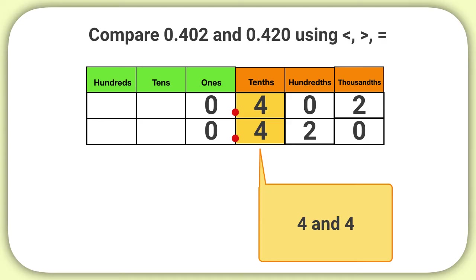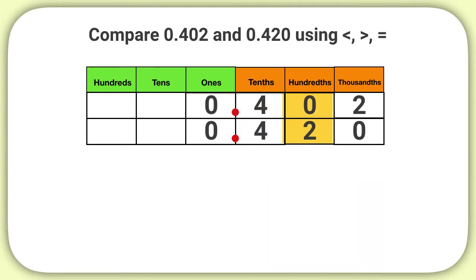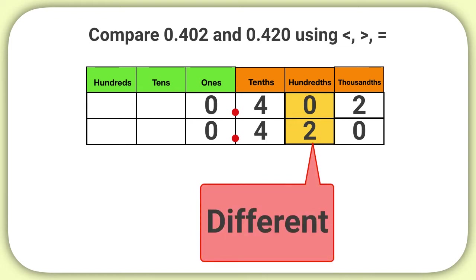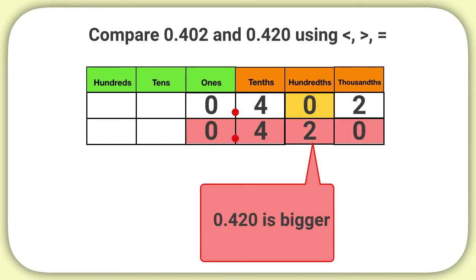These digits also have the same value, so I look to the right to the hundredths place. In the hundredths place, I see a 0 and a 2. The 2 is different than the 0. Which is greater, 0 or 2? 2. So the number with the 2 in the hundredths place must be the bigger number. 420 thousandths is greater than 402 thousandths.